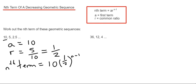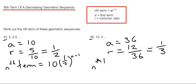Let's move on to example 2. This time we've got 36, 12, and 4. Again, we need the first term, which is 36, and our common ratio. We divide the second term by the first term: 12 divided by 36. We can simplify this fraction - if we divide by 12, that gives us one third. Therefore, our nth term formula would be 36 times one third to the power of n minus 1.